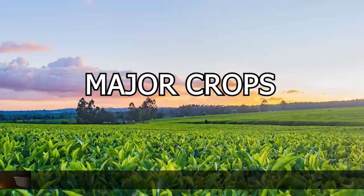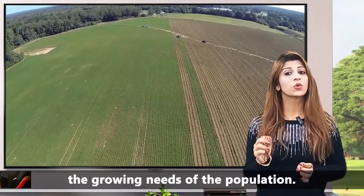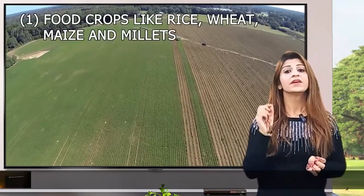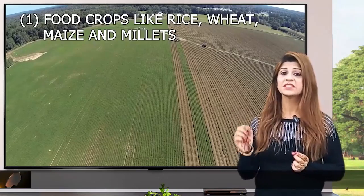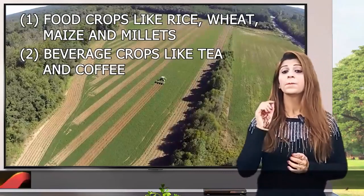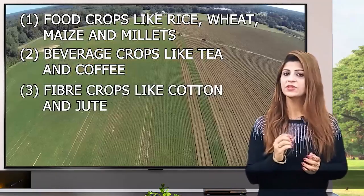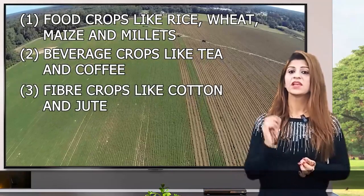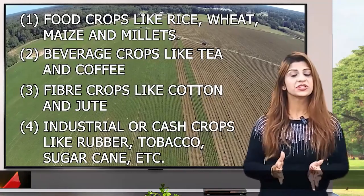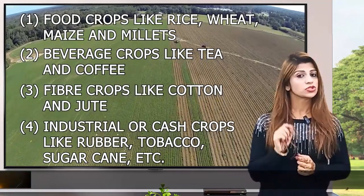Major crops: We grow a large variety of crops to meet the growing needs of the population. These include: (1) food crops like rice, wheat, maize and millet; (2) beverage crops like tea and coffee; (3) fiber crops like cotton and jute; and (4) industrial or cash crops like rubber, tobacco, sugarcane, etc.